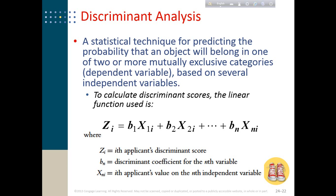As an example, consider a recruitment test where candidates were judged against three variables: their age, their score on a self-aptitude test, and their mechanical ability. Based on these three variables, the final outcome is whether a particular candidate is successful or unsuccessful — so the dependent variable takes nominal characteristics, where 1 means successful and 0 means unsuccessful.